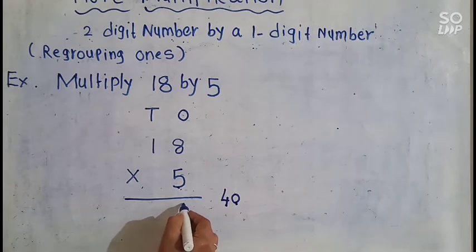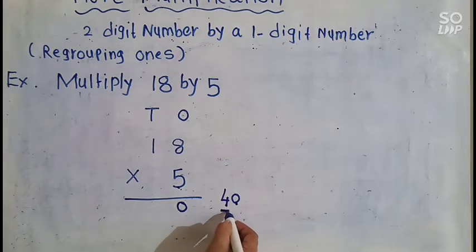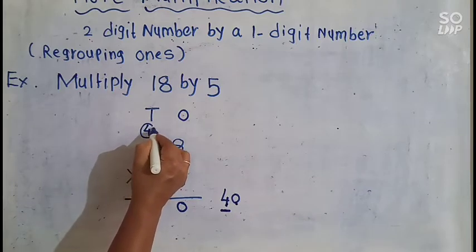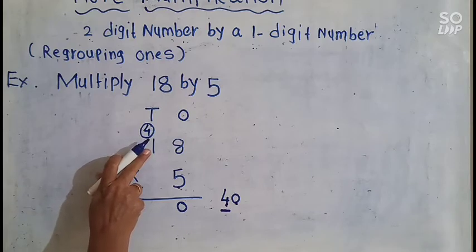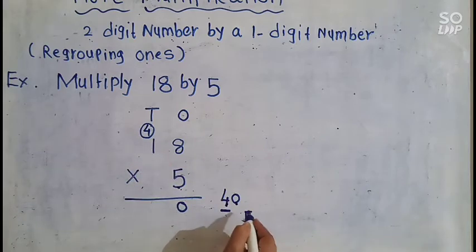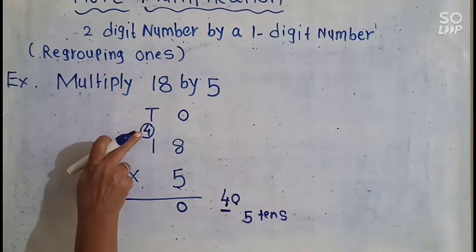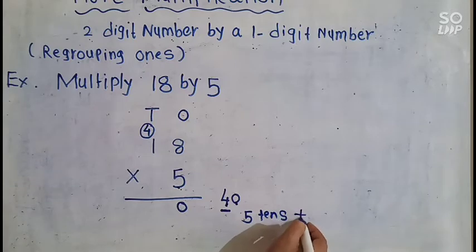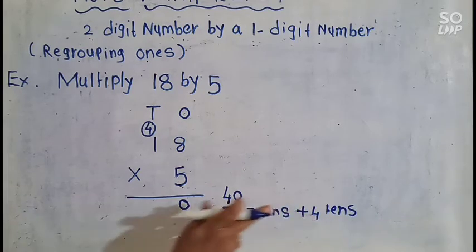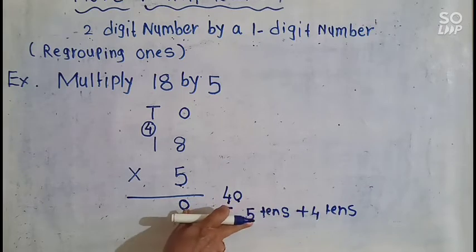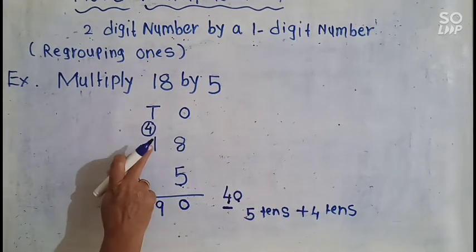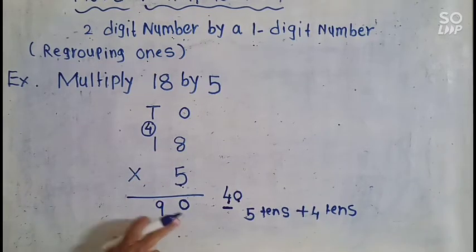So this 0 ones we write here in the 1s place, and these 4 tens we have to carry over here in the 10s column. Then we multiply the 10s place: 5 1s are 5, meaning 5 tens. We add these 5 tens and the 4 tens carry over: 5 + 4 = 9 tens. We write these 9 tens in the 10s column, so 18 × 5 = 90.